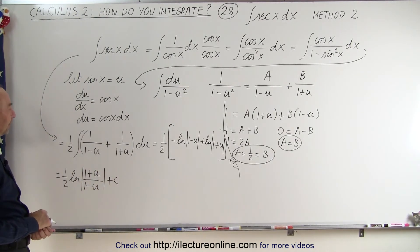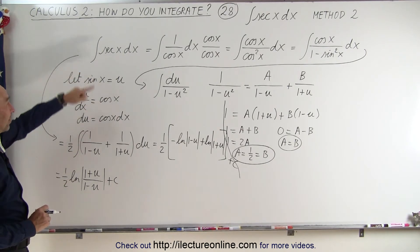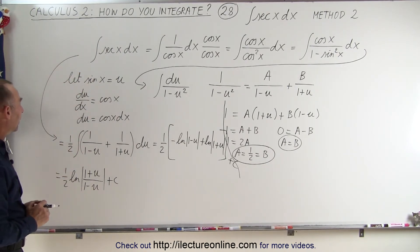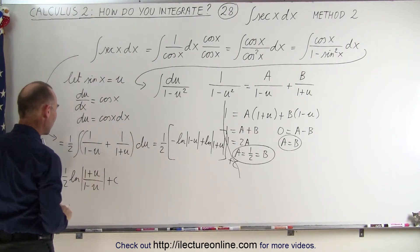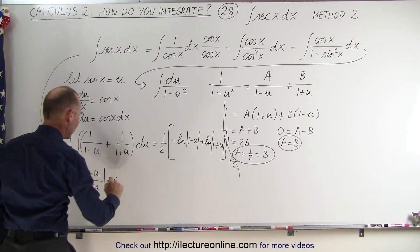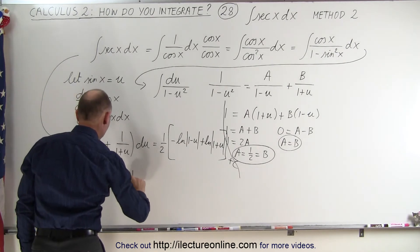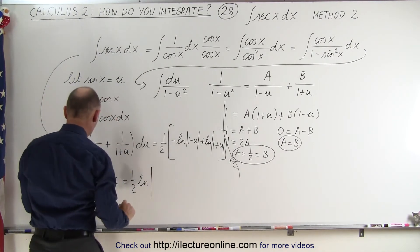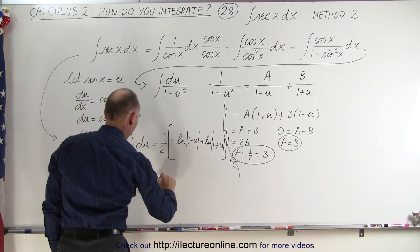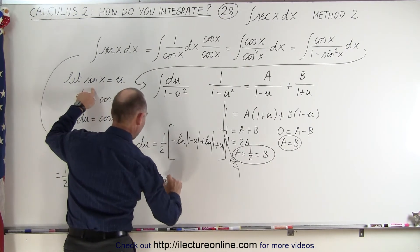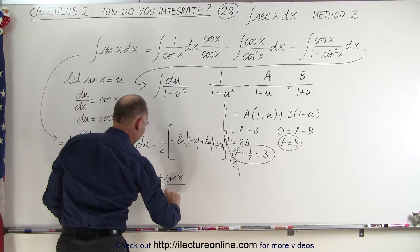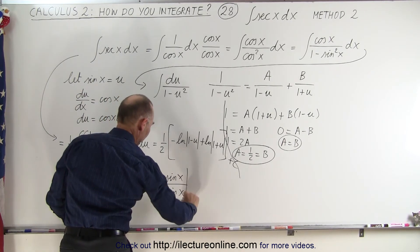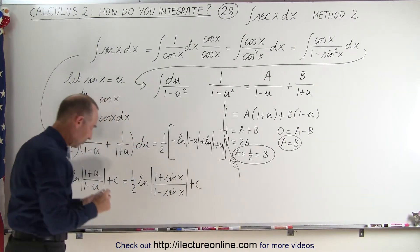We have u here, but we started with x, so we have to work our way back. We made the substitution that u equals sine of x, so we can substitute that now. This becomes equal to 1/2 times the natural log of (1 plus sine of x) divided by (1 minus sine of x), plus a constant of integration.